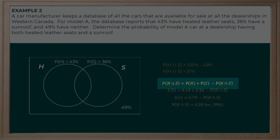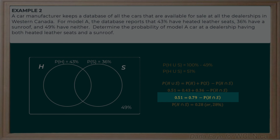Now we can use our equation to determine the intersection — the probability that a dealership will have a car with both heated seats and a sunroof, which is P(H and S). Using the equation for non-mutually exclusive events: 0.51 equals 0.43 plus 0.36 minus P(H and S). Simplifying and solving for the intersection gives us 0.28, or 28%.